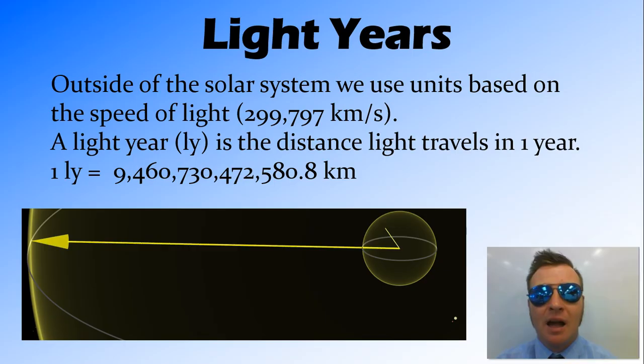So light does have a speed. And the speed is really fast. It's 300,000 kilometres per second. And you think about that distance in a second, that's a long way to go in a second. Then you've got to think about how, travelling at that speed, how far would that go in a year?